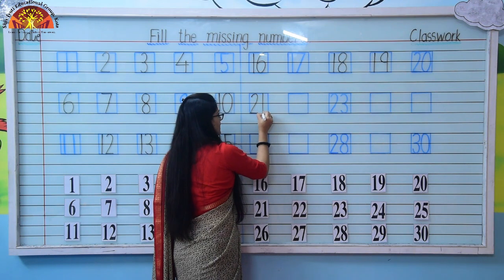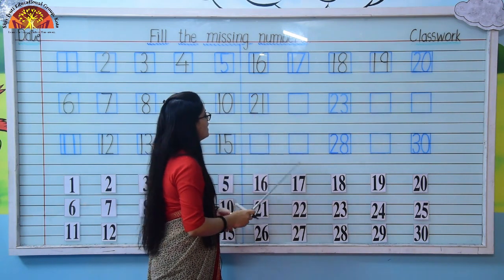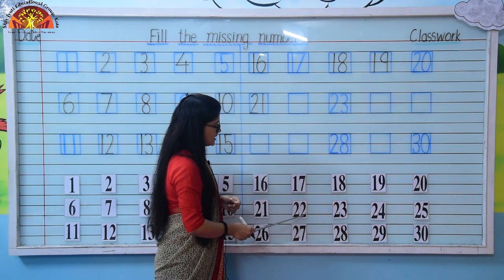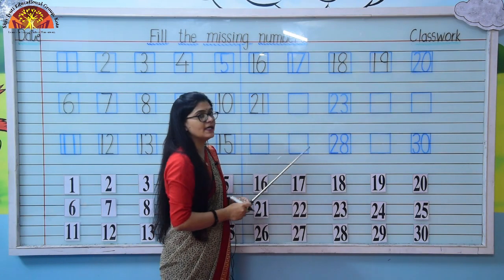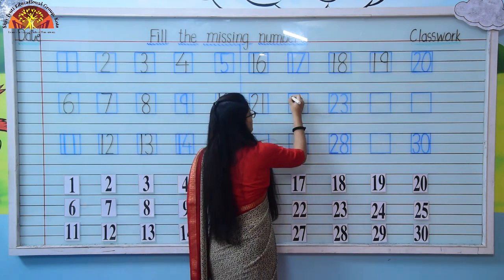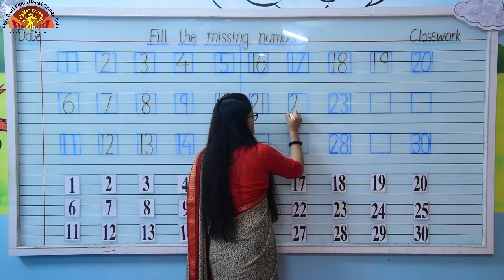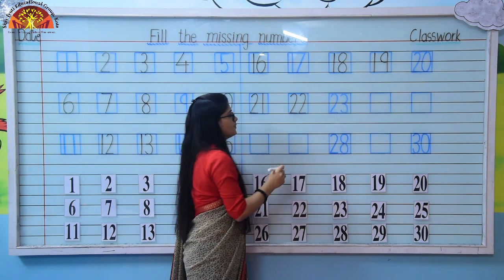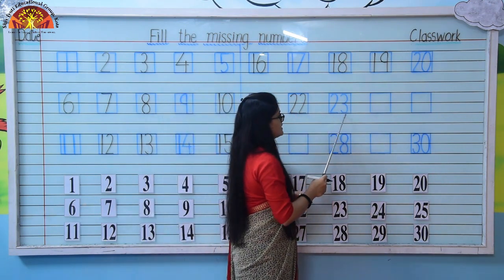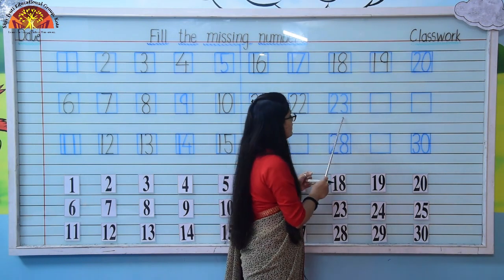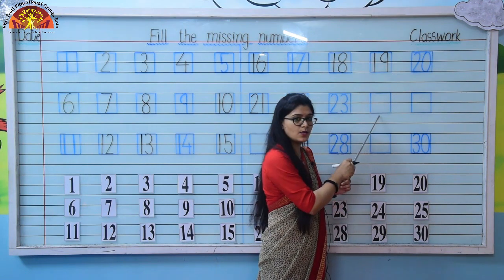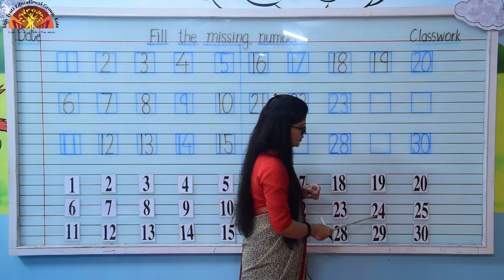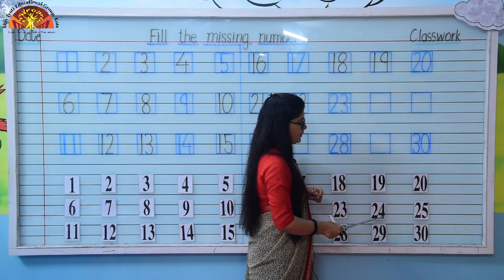Touch the block properly kids and write. Again a number is missing. So which number comes after 21? It's 22. So here we will write number 22. Our next number is 23 — it's already written. Come to next one — the number is missing. So which number comes after 23? It's 24. So here we will write number 24.